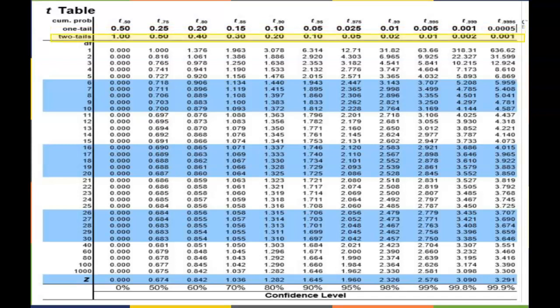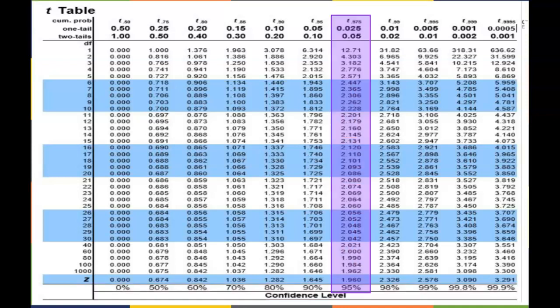We're actually going to focus on the last row of this table, which tells us our confidence level. So if my confidence was 95% and my degree of freedom was 19, then my corresponding t score would be 2.093.